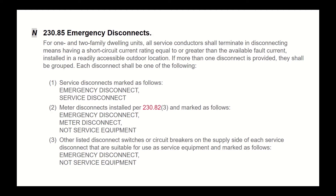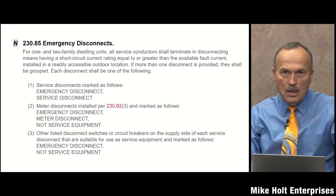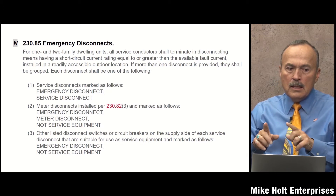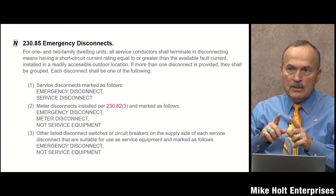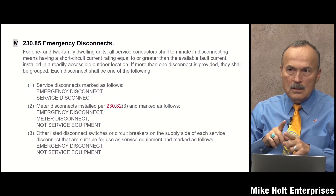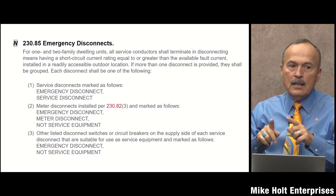The last option is other listed disconnects or circuit breakers on the supply side of each service disconnect that are suitable for use as service equipment. So you can put a disconnect that's rated as service equipment ahead of the service disconnect.